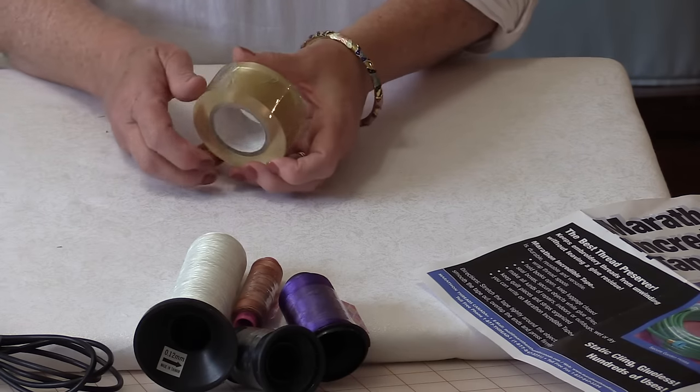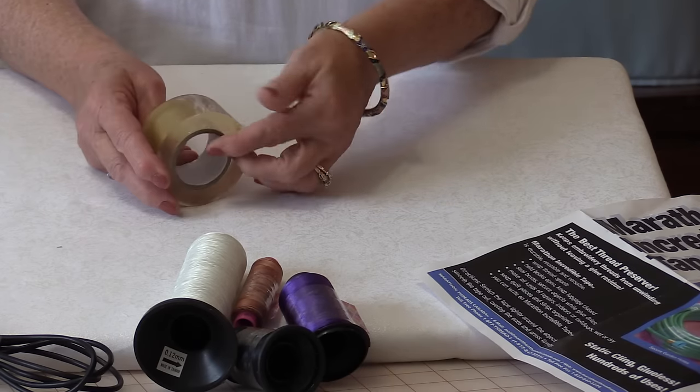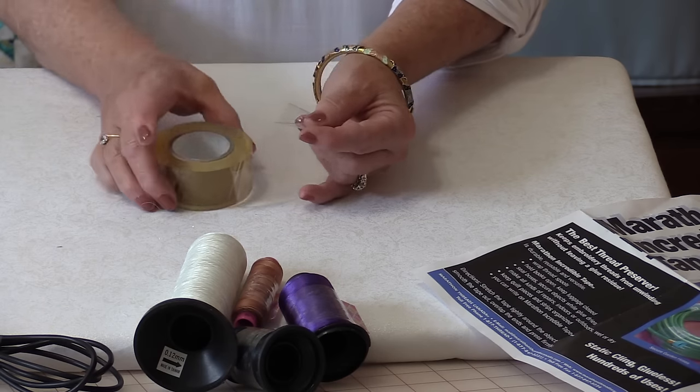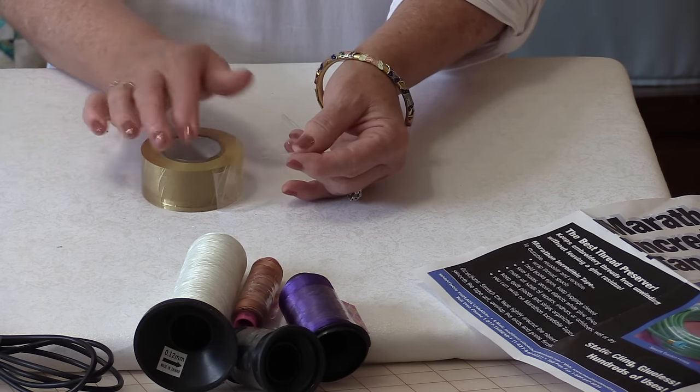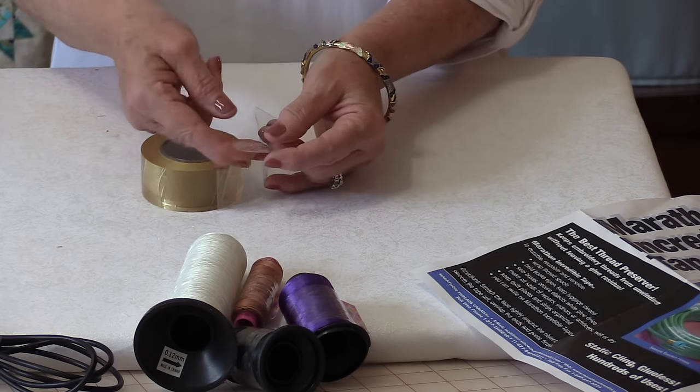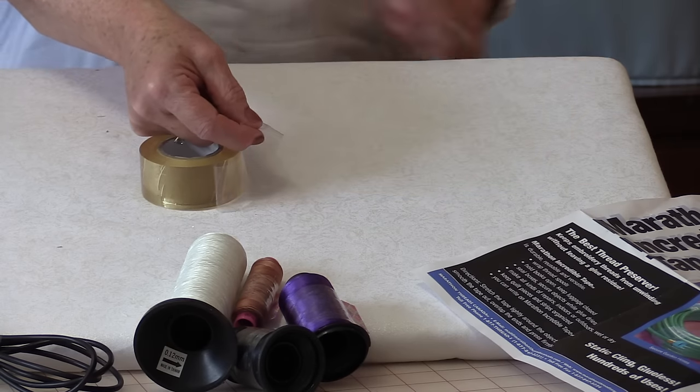When you get the tape it is very transparent. So what you're going to do is you're going to take your roll of Incredible Tape and the first edge you're going to cover with another tape.